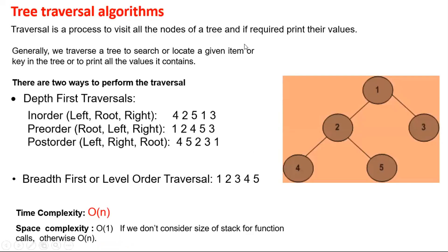Regarding tree traversal, we have two strategies: depth first search traversal and breadth first, or level, traversal. In breadth first search we traverse levels 1, 2, 3, 4, 5. But in depth first traversal we have three ways: in-order (left, root, right), pre-order (root, left, right), and post-order (left, right, root).